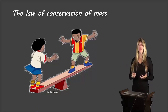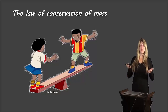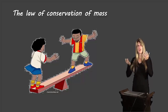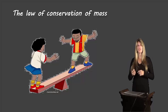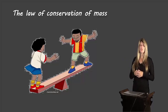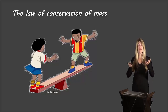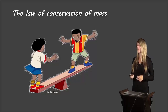The law of conservation of mass is all about balancing equations, making sure that we have the same amount of one substance on this side and the same amount of that substance on the other side. That's why I've chosen this picture of the children on the teeter-totter — we're trying to balance to make sure that we have the right amount of everything on each side of the equation.